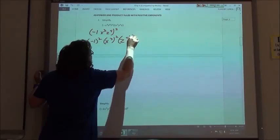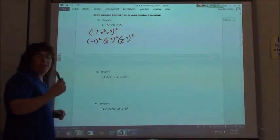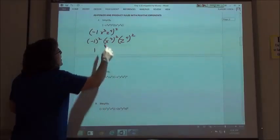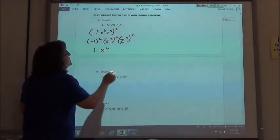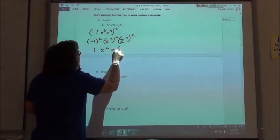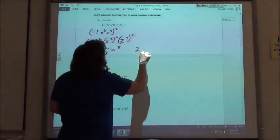z to the fourth and square it. So negative 1 squared, negative 1 times negative 1 is 1. I would multiply my exponents using my power rule, so x to the sixth and z to the eighth. I'm then going to multiply that times the 2x squared y to the third z that I have in my other set of parentheses.